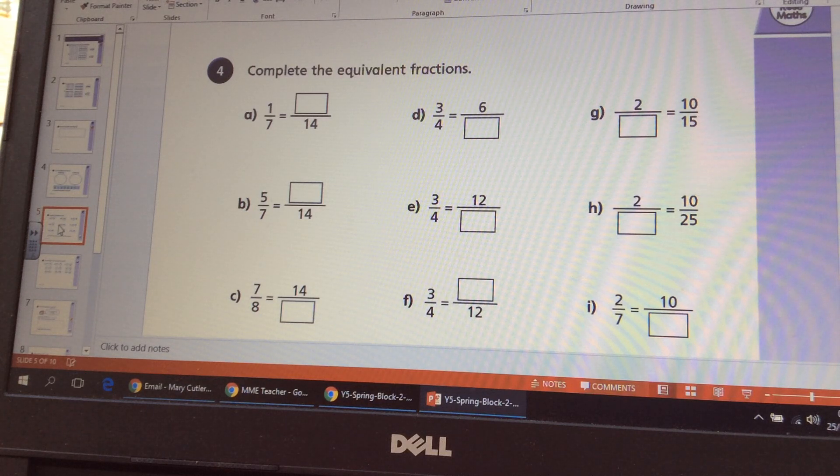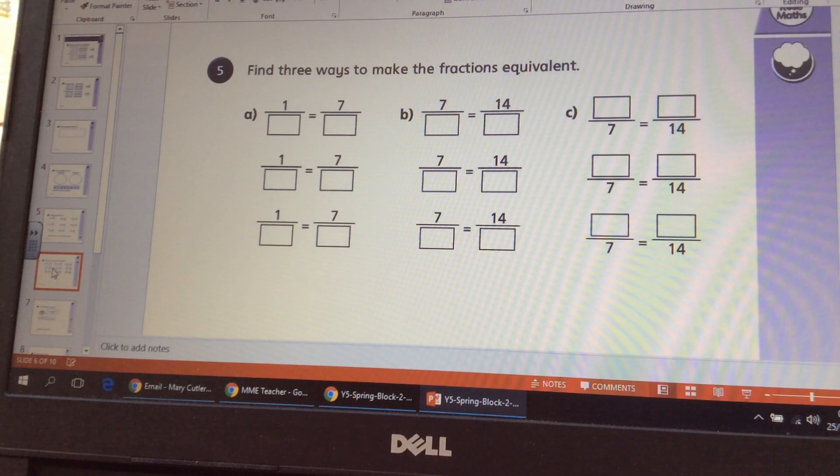Again you're using that pattern, you're using your knowledge of the multiplication tables here. So for A you'd say what if I multiplied seven by to get the denominator 14, and then you would need to multiply one by the same amount. So this is where your tables and understanding your times tables really helps here. Exactly the same for this question except you've got to find three different examples.